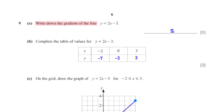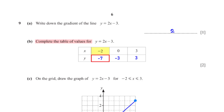Write down the gradient of the line y = 2x − 3. The line is in the form y = mx + c, so the coefficient of x is the gradient, which is 2. Complete the table of values: for x = −2, y = −7; for x = 0, y = −3; for x = 3, y = 3.